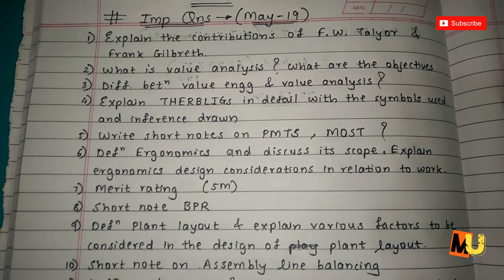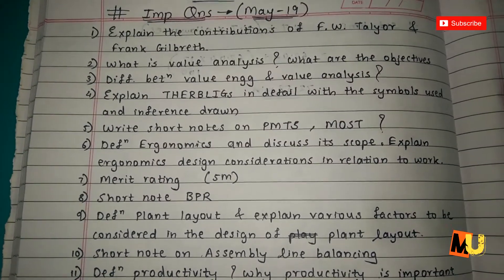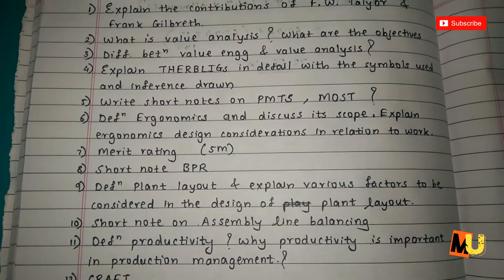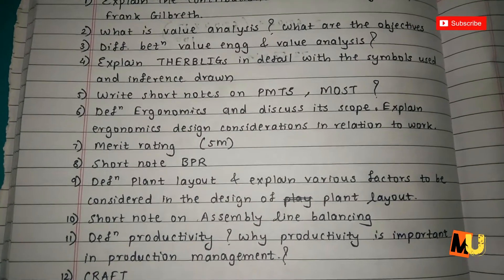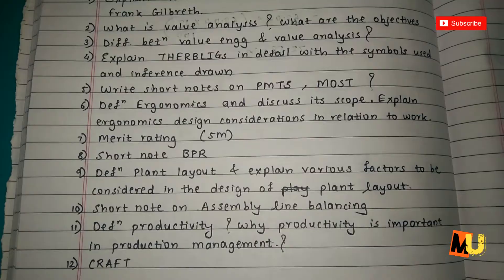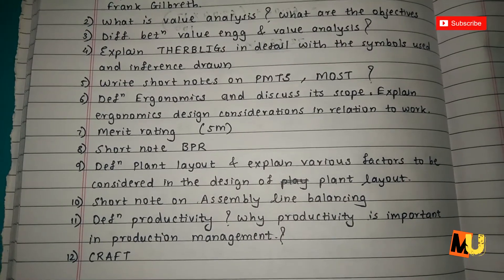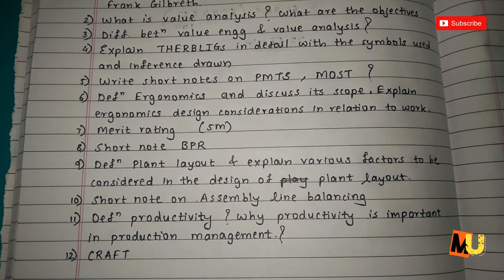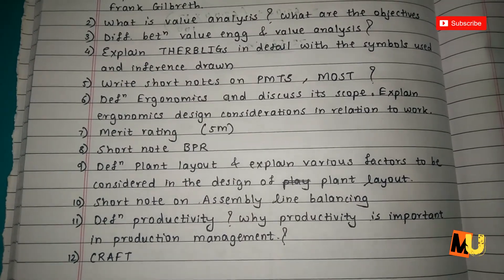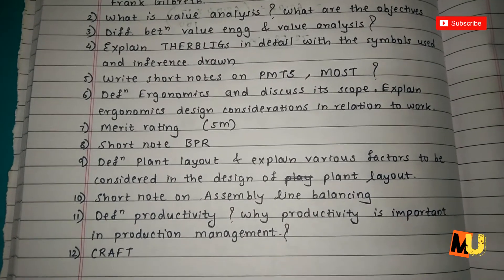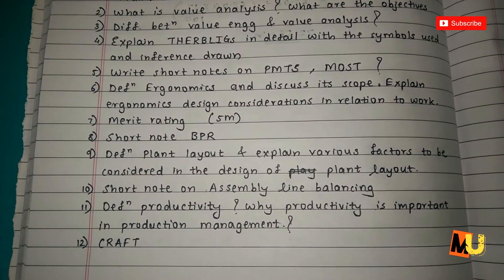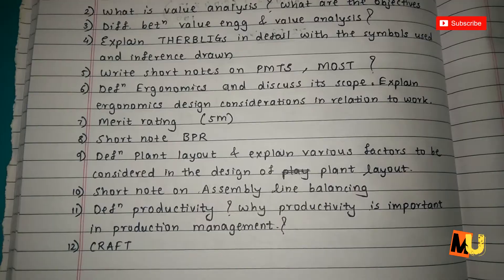The sixth question on merit rating is also important for five marks. The seventh is: write a short note on BPR. The eighth question is: the definition of plant layout and explain the various factors to be considered in the design of the plant layout. The ninth is: write a short note on assembly line balancing.